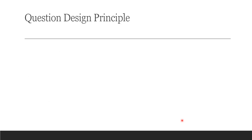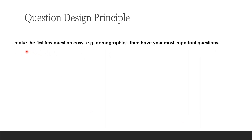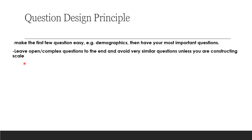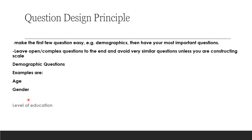For question design principles: make the first few questions easy — for example, demographics. Then have your important questions, and leave open or complex questions to the end. Avoid very similar questions unless you are constructing a scale. Examples of demographic questions include age, gender, level of education, socioeconomic background, religion, and many more.